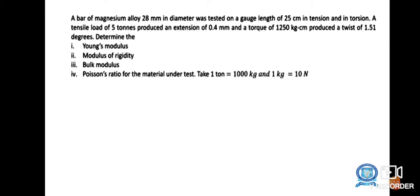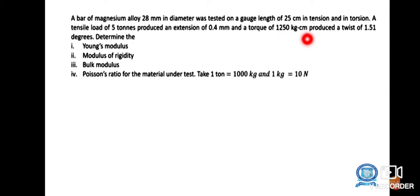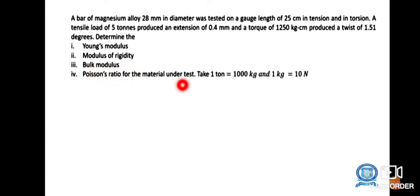Given data summary: diameter = 28 mm, gauge length = 25 cm, tensile load = 5 tons producing extension of 0.4 mm, torque = 1250 kg·cm producing a twist of 1.51 degrees. Determine Young's modulus, modulus of rigidity, Poisson's ratio, and bulk modulus for the material under test. Take 1 ton = 1000 kg and 1 kg = 10 N.